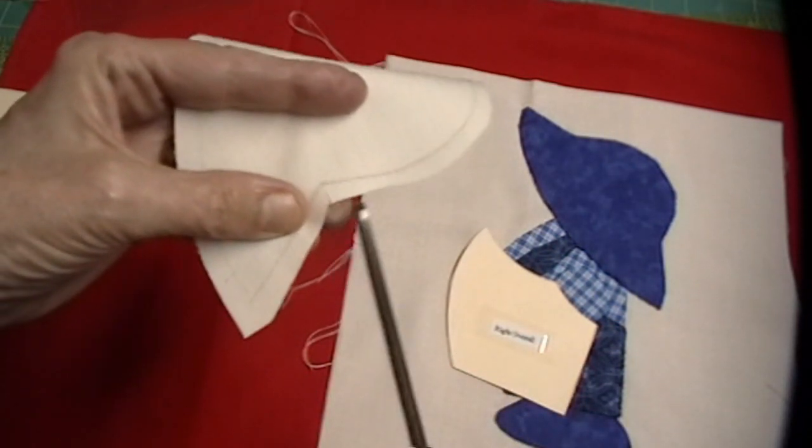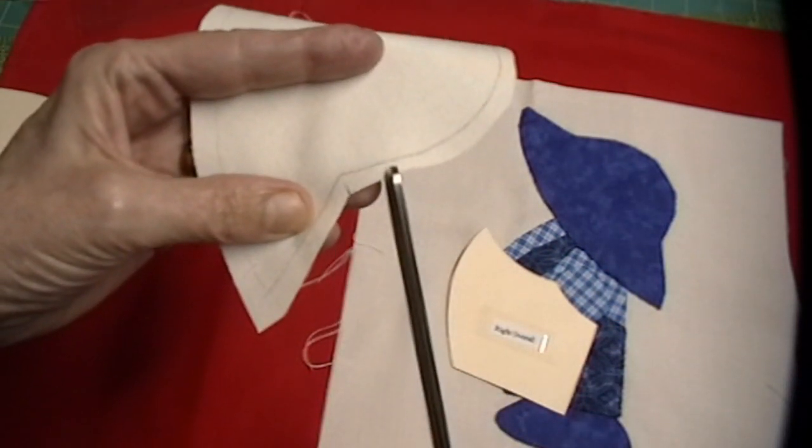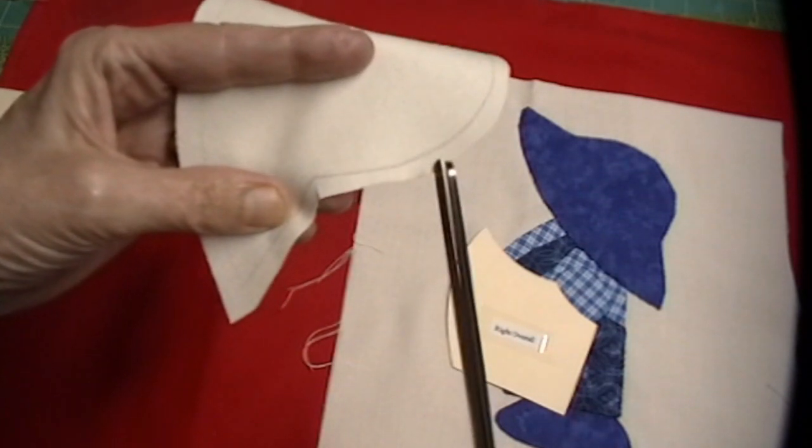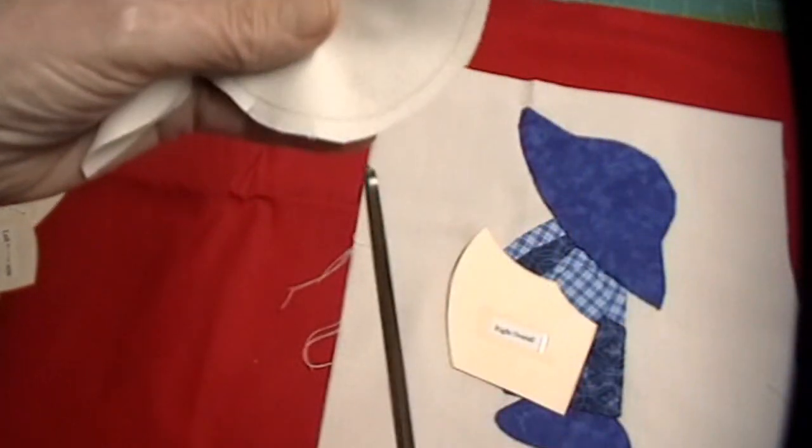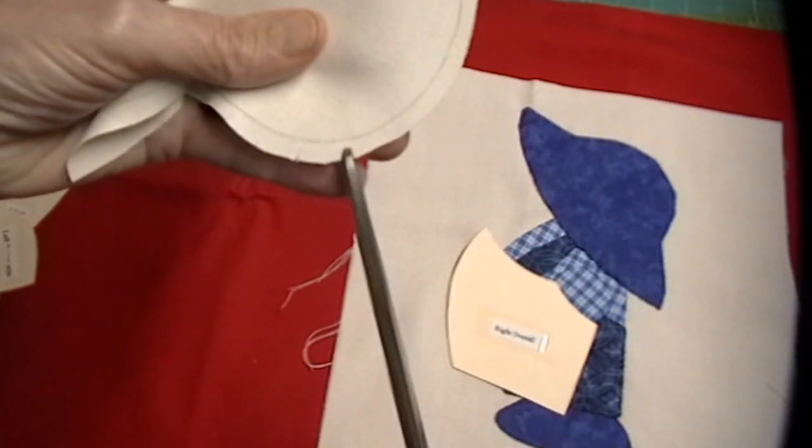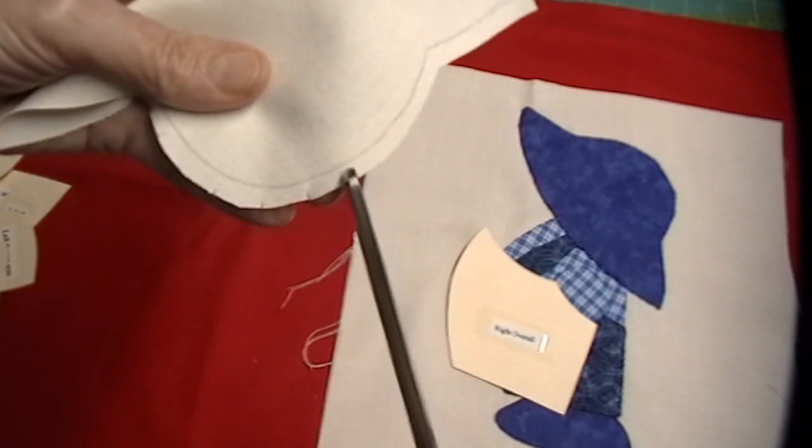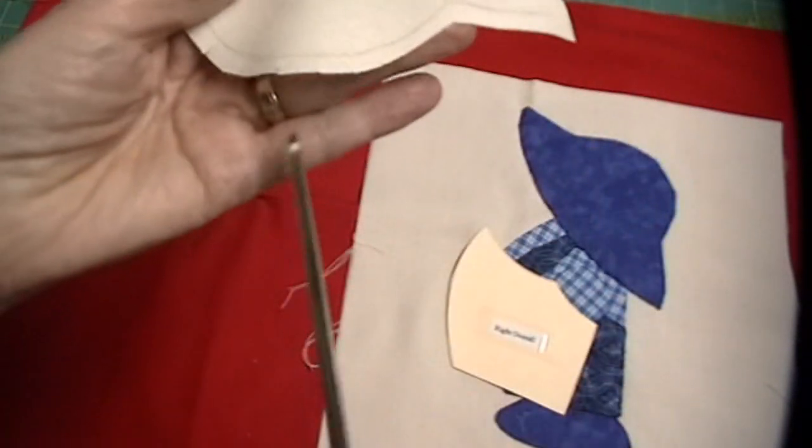The next thing to do is to clip. And you want to clip your edges, because as you turn it, you want it to have some give. Now, you don't want to cut the line. That would be bad. But you do want to cut up close to it. And there are a couple of things that you need to know. Warning, red light. Be careful.